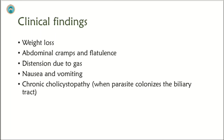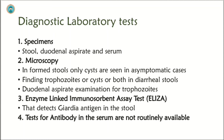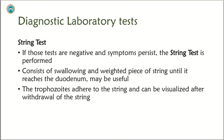Diagnostic laboratory tests: First, we collect specimens — stool, duodenal aspirate, and serum. In formed stool, only cysts are seen in asymptomatic cases; both trophozoites and cysts may be found in diarrheal stool. Duodenal aspirate is examined for trophozoites. ELISA detects Giardia antigen in the stool. Tests for antibodies in serum are not routinely available. If tests are negative and symptoms persist, the string test is performed — the patient swallows a weighted piece of string until it reaches the duodenum. Trophozoites adhere to the string and can be visualized after withdrawal.